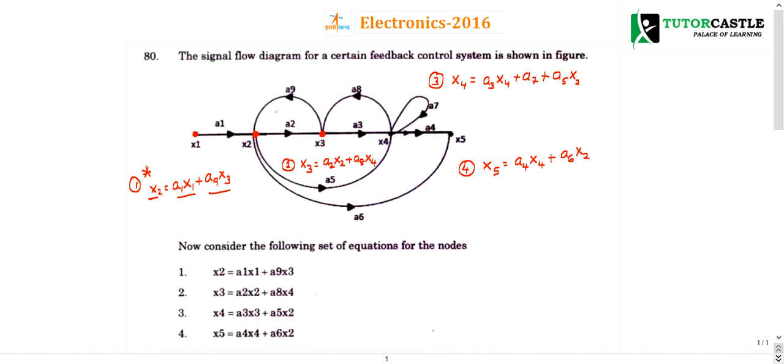What are the incoming nodes for x3? a2 and a8. What are the gains? So a2 is coming from node x2: a2x2, plus a8 is coming from x4: a8x4. This is a simple way of writing.